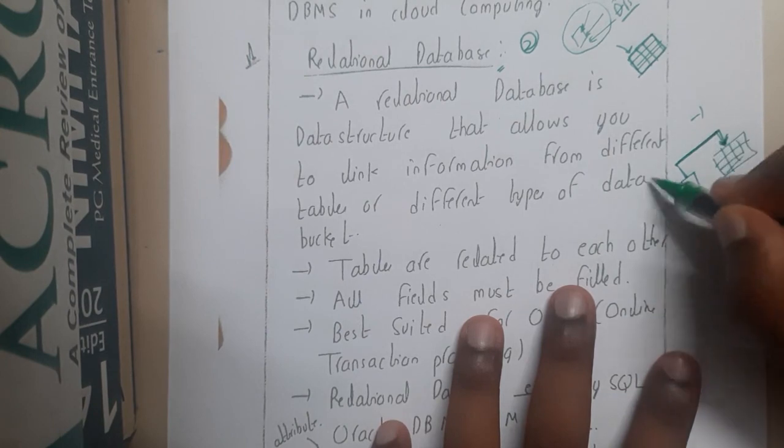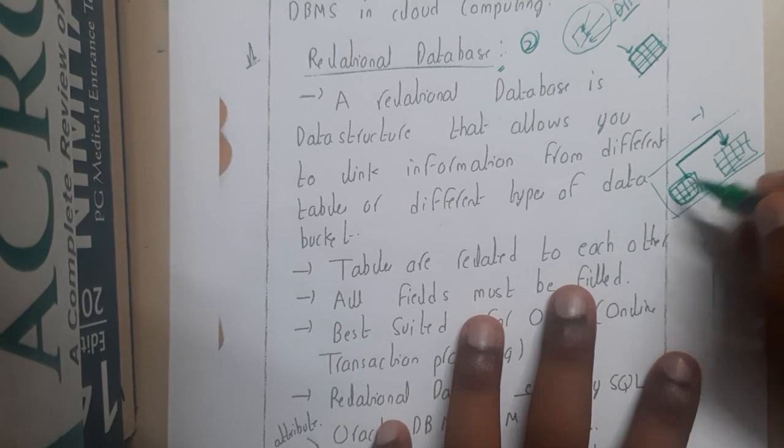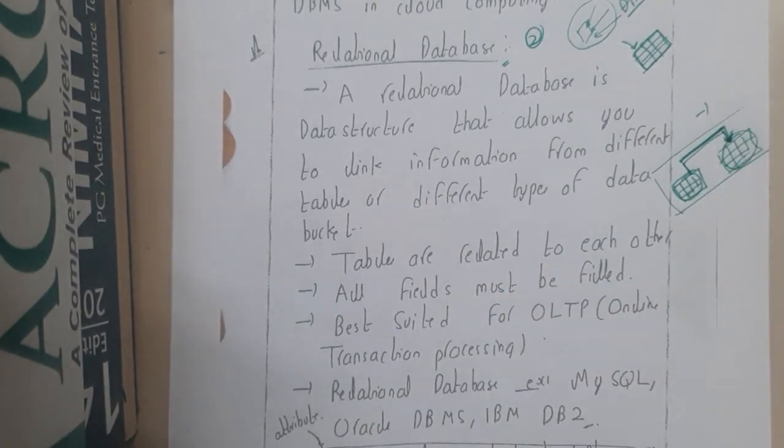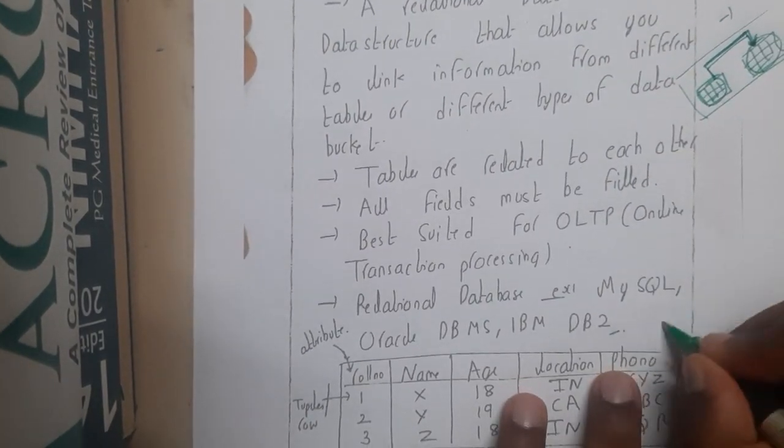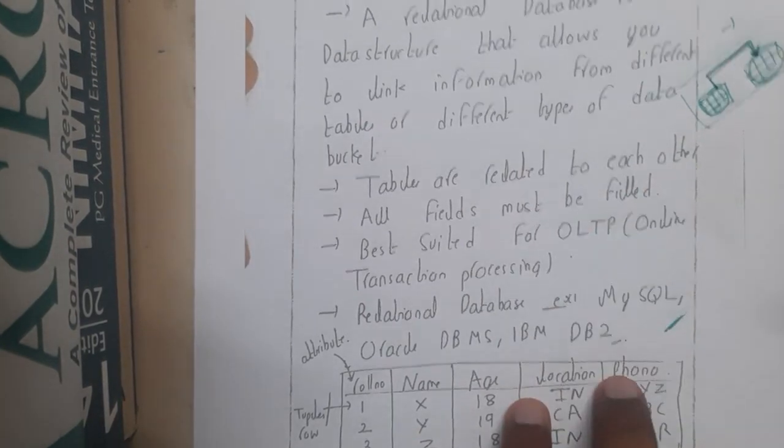Basically, here you will be having a primary key and here you will be having a foreign key. That is linked here, so in that way you will be maintaining those links. A few examples will be MySQL, Oracle DBMS, IBM DB2, and a few more.